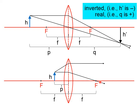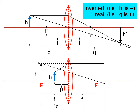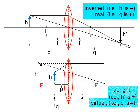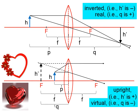Now those two refracted rays don't intersect, so we need to project those refracted rays backwards, and there they appear to intersect right here, which gives us a virtual image. This will have a negative q because it's a virtual image, and a positive h prime. Remember that we only need two of the three possible rays to give us our image. This is a larger, upright, virtual image, which is what you get every time your object is between the focal point and a converging lens.